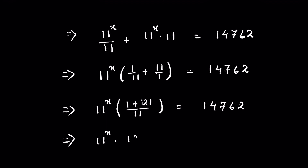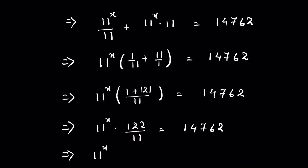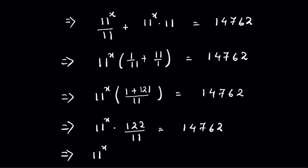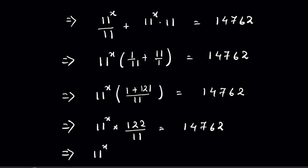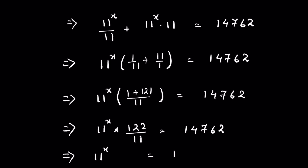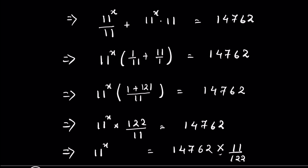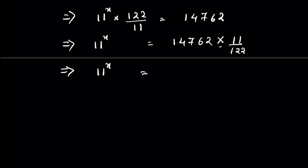Now 11 raised to the power x — we can send 122 upon 11 to the right-hand side. Since this is multiplication, when we change the side it becomes division. So 11 raised to the power x equals 14762 times 11 upon 122, because when you change division into multiplication we write the reciprocal of the fraction.